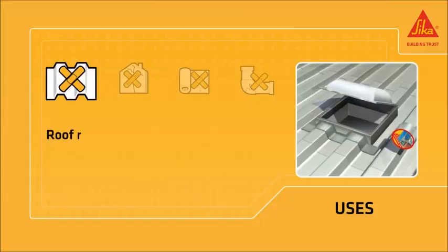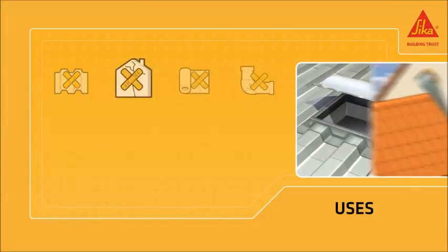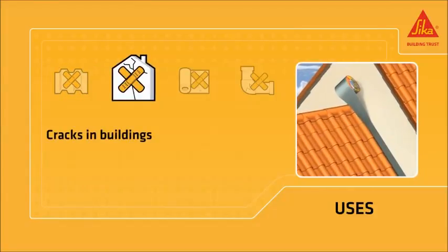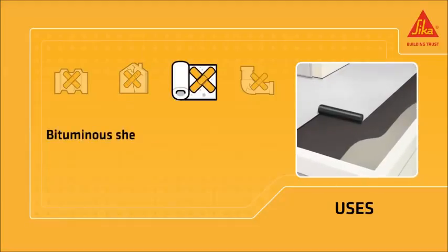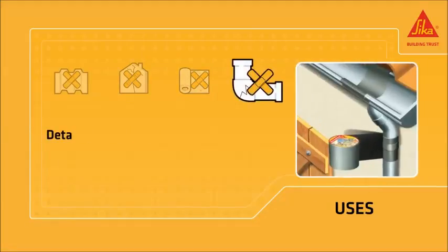Sika MultiSeal can be used for roof repairs including metallic roofing, cracks in buildings, bituminous sheets and other roofing details, gutters, etc.